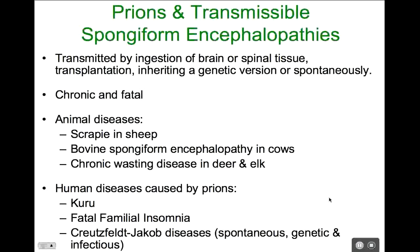There are also genetic versions — fatal familial insomnia is seen in a handful of families of Italian descent who have a genetic predisposition to forming misformed brain proteins. The most common human prion disease is Creutzfeldt-Jakob disease, where brain proteins are misshapen and aggregate into spongy lesions. Infectious Creutzfeldt-Jakob comes from ingesting cows' or sheep's brain or spinal tissue — even a hamburger may contain some brain or spinal tissue from the butchery process. There's also a genetic version, and probably most commonly, Creutzfeldt-Jakob develops completely spontaneously with no known cause.